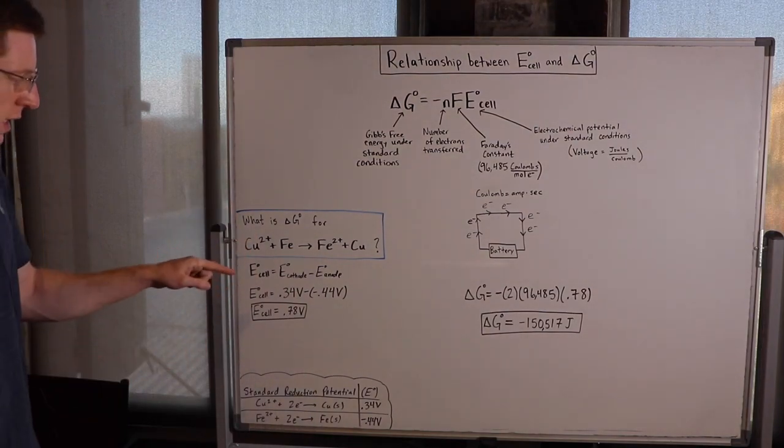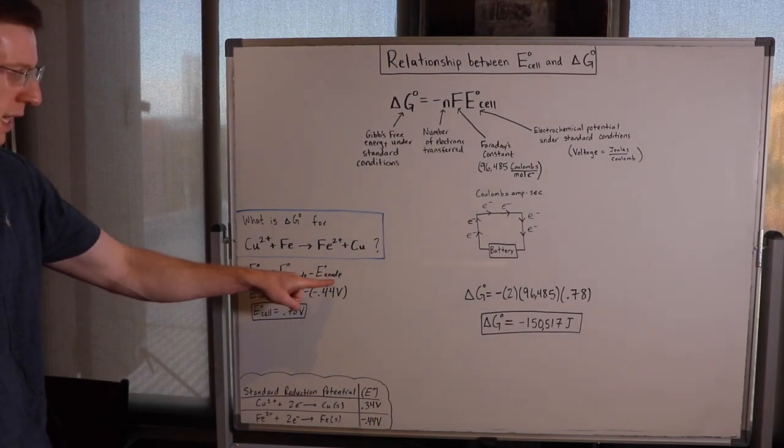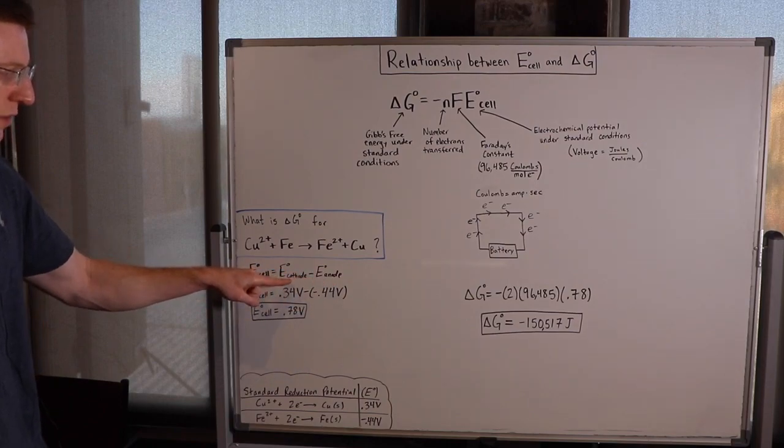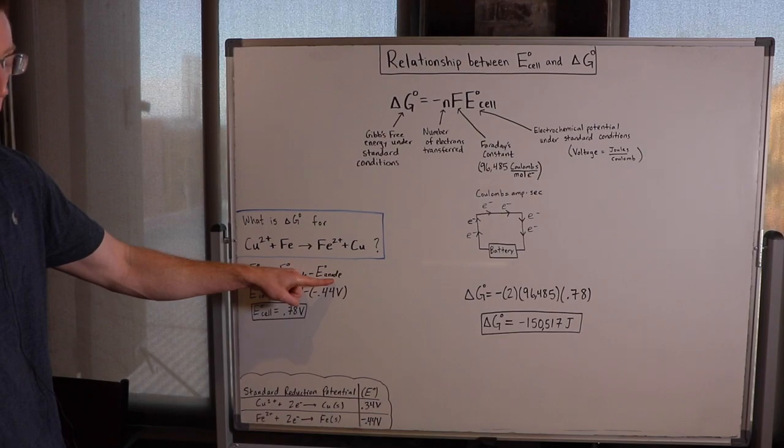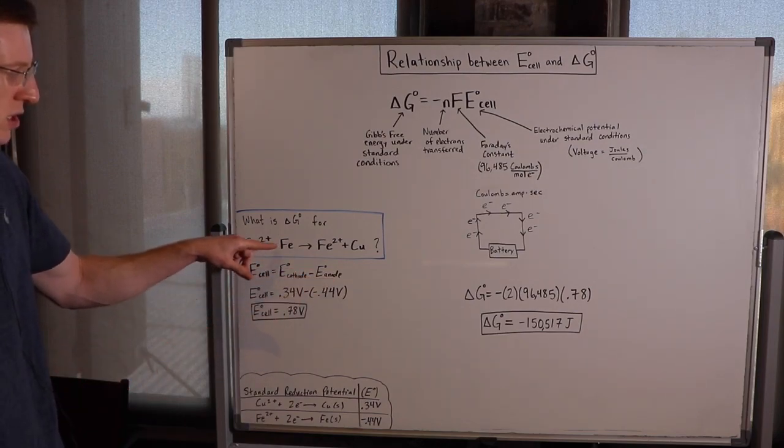So if we want E-cell under standard conditions, we know we can use the equation E-cell equals E-cathode minus E-anode. And we know that at the cathode, reduction occurs, and at the anode, oxidation occurs.